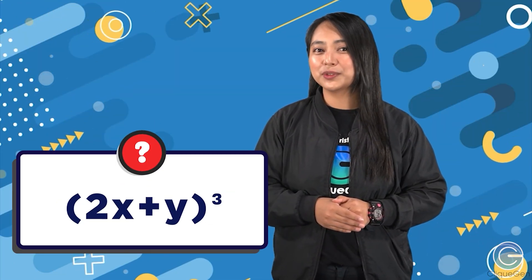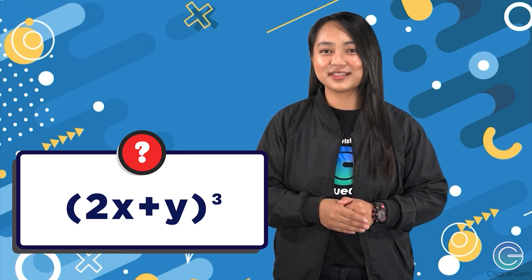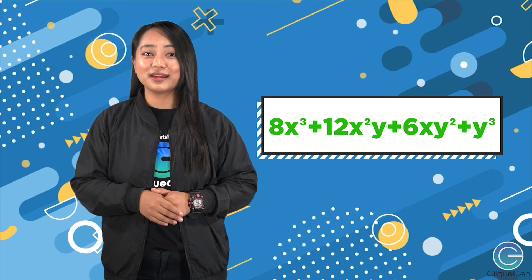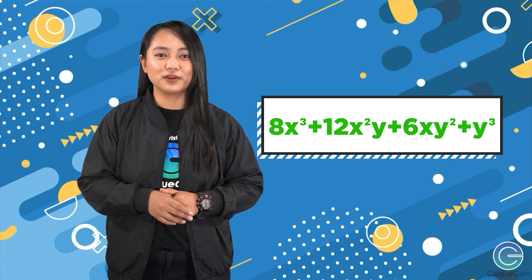Now you try this out: what is the cube of 2x plus y? I will give you 15 seconds to do this — start now. The answer is 8x cubed plus 12x squared y plus 6xy squared plus y cubed. If you got the same answer then you are correct; if not, try again.